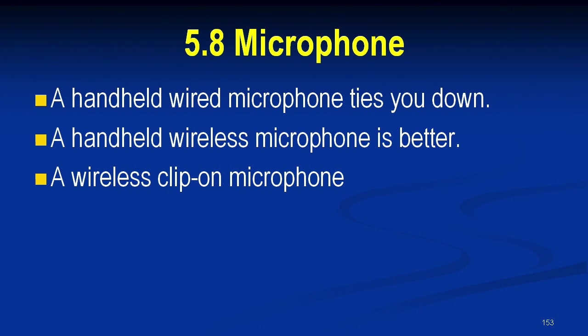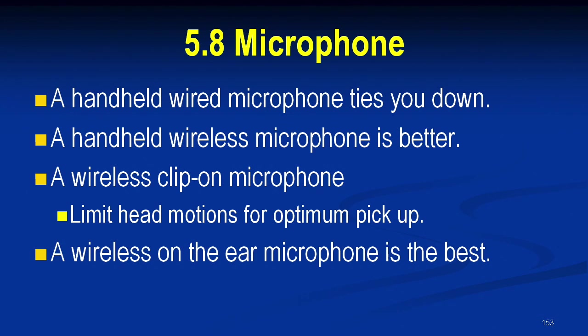The second option is a handheld wireless microphone. You'd prefer not to use it for an extended presentation, but it's useful when you bring a student up or someone needs to say a few words — a handheld wireless is perfectly fine for that. The next best option is a wireless clip-on microphone that you put on your shirt or tie. The disadvantage is that when you bend down to look at your code book or computer, the sound changes. Just be aware of the limitations of the clip-on.